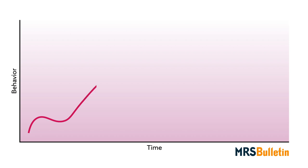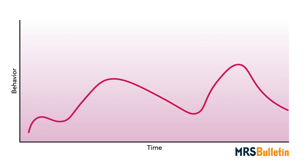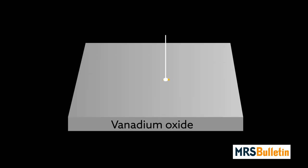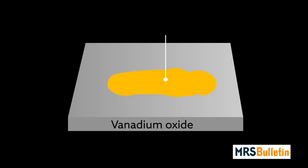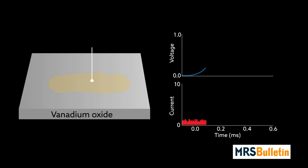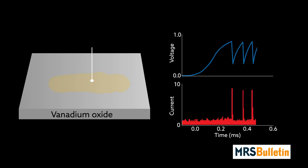Researchers can recreate this time-dependent behavior electronically using quantum materials. Take vanadium oxide, for example. This quantum material can transform from an insulator to a conducting metal under an applied voltage. Under the right conditions, this transition can be co-opted to produce the same patterns of oscillating current observed in firing neurons.